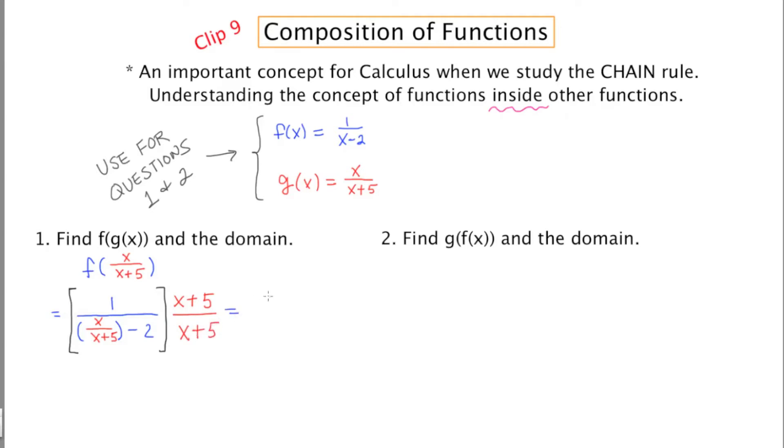So now on the top we have x plus 5, and on the bottom, if we distribute this x plus 5 here into each of these terms, into this guy and into this guy, it's going to cancel for the first distribution, leaving us with just x. And then for the second distribution, we're going to have a negative 2, and then the x plus 5.